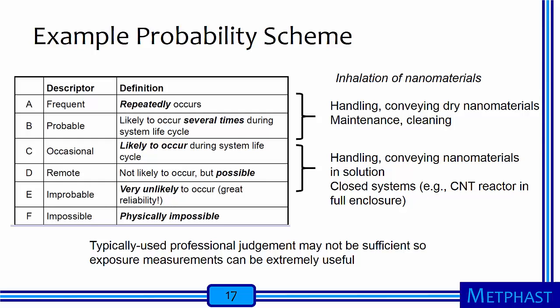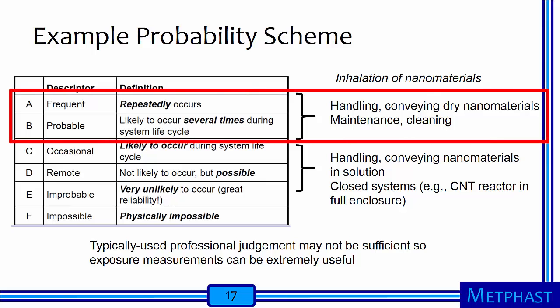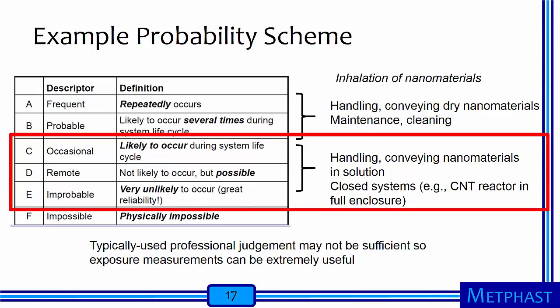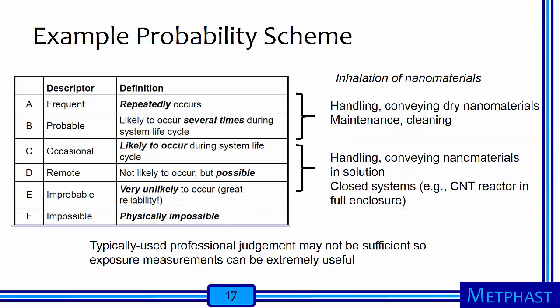Probabilities are assigned based on how frequently a hazardous event may occur. I show one scheme here that uses an alphabetic ranking, where A is used for frequent events that repeatedly occur in the workplace, through F used for physically impossible to occur. Frequent or probable inhalation is assigned to frequently performed processes such as handling of dry nanomaterials and maintenance or cleaning of equipment. A lower probability is assigned to processes less likely to occur, such as handling nanomaterials in solution or interaction with nanomaterials if fully enclosed. Professional judgment is often used as a starting point, but measurements with direct reading instruments can be very helpful in assigning probabilities.